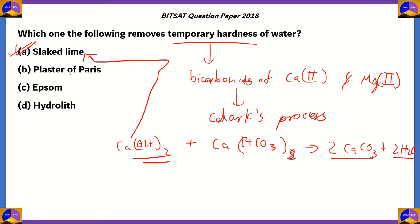Option B — plaster of Paris — is incorrect because it is calcium sulfate hemihydrate. Magnesium sulfate makes Epsom salt, so that is also incorrect. Hydrolith is also incorrect.